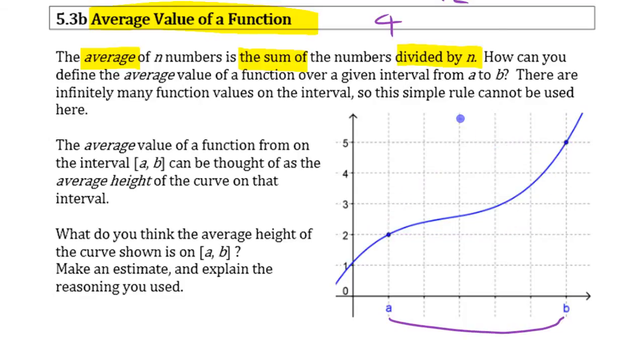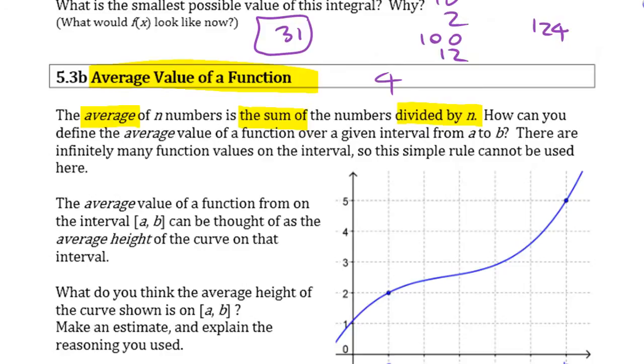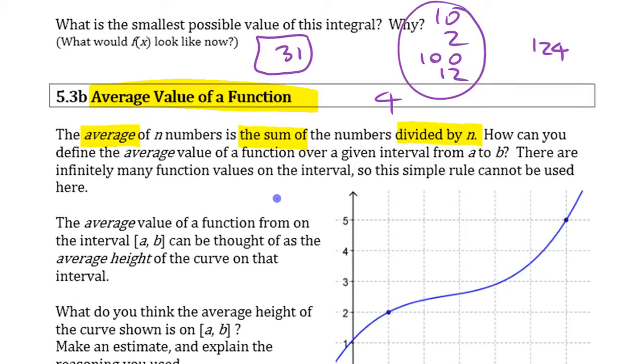So how do you work out the average? You do it exactly the same way as you do here. You take the total, and you spread it out equally amongst all of the people, except here, the people, there's an infinite number of people.